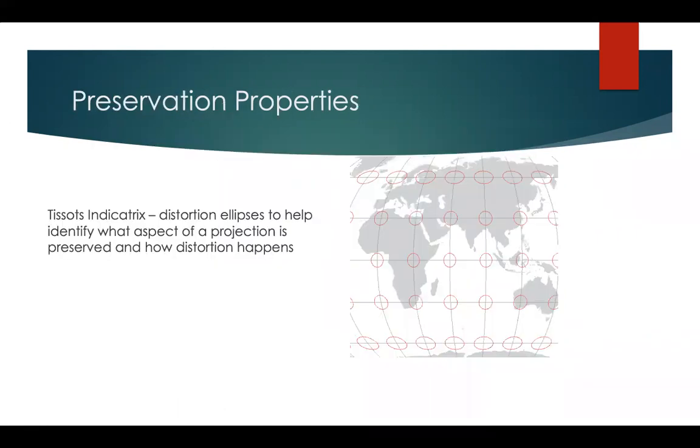Finally, TISOs and Dicatrix are distortion ellipses, which are used to help identify which aspects of a projection is preserved and how that distortion happens. You'll use these in lab.